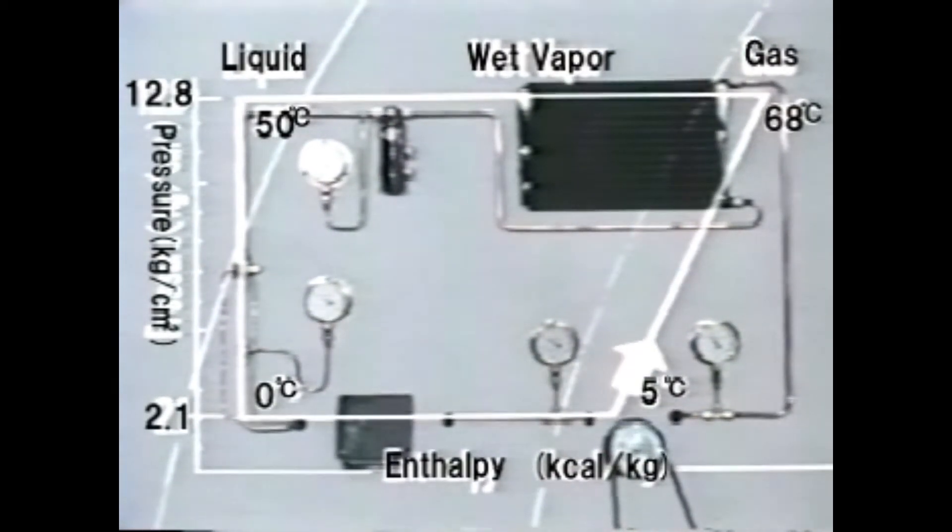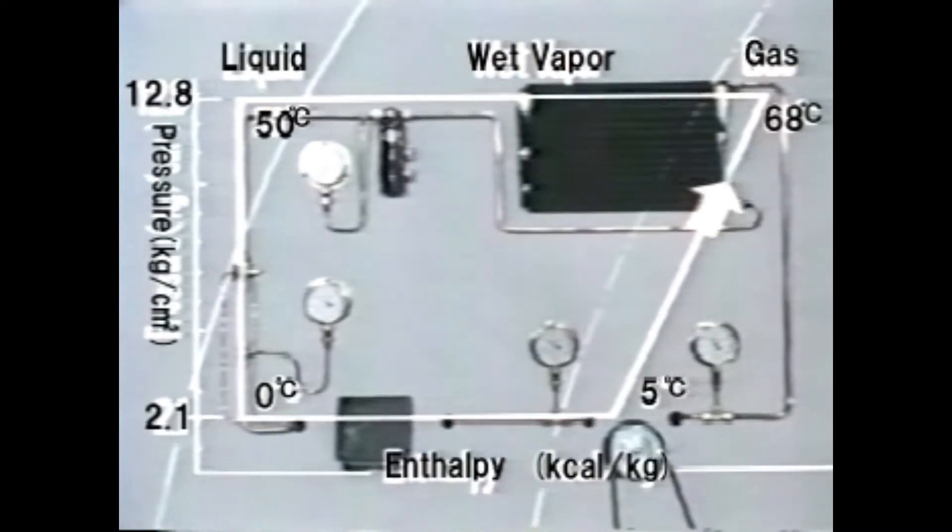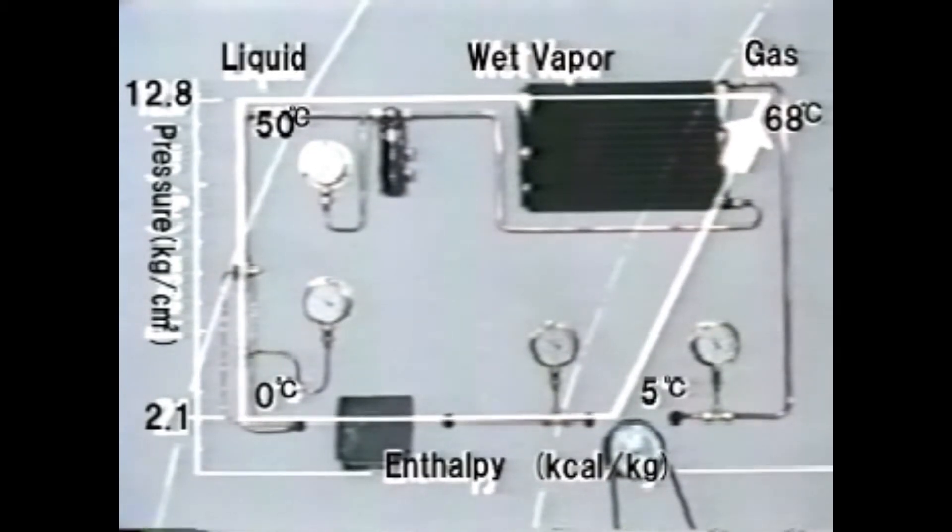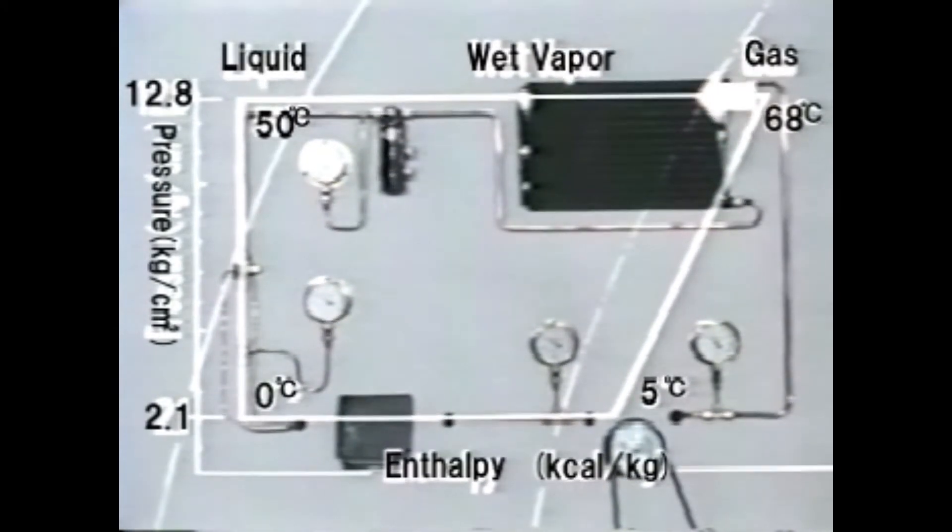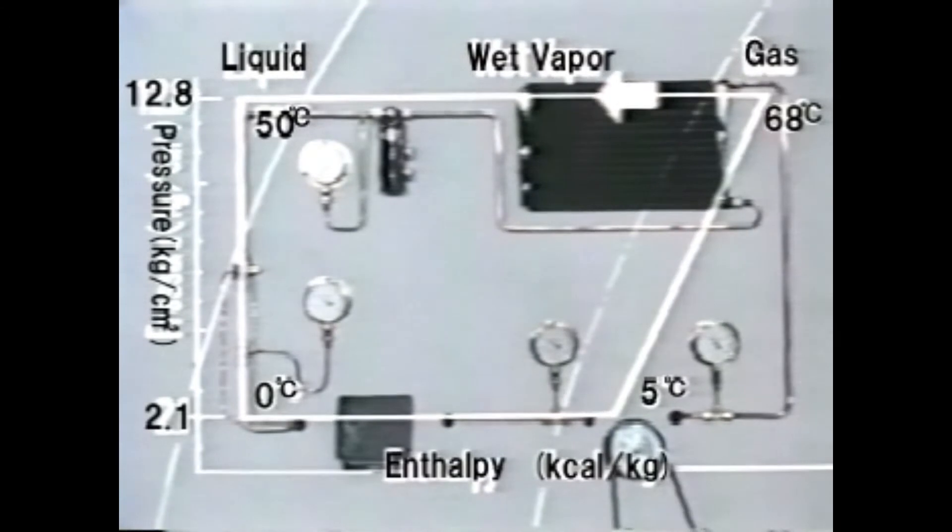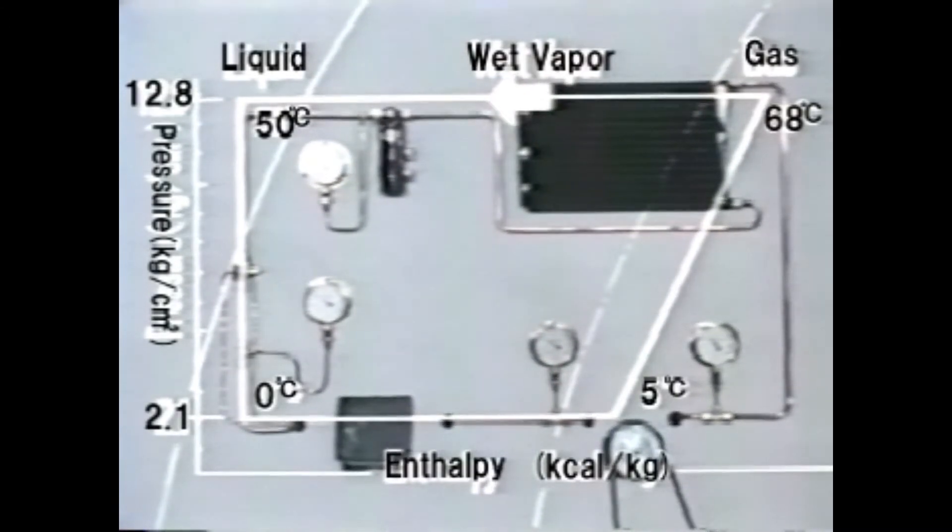And compressed in the compressor, it turns gaseous form with its pressure increased to 12.8 kilograms per square centimeter and its temperature at 68 degrees centigrade. In the condenser it is condensed under the same pressure into a liquid at 50 degrees centigrade, which is transmitted to the expansion valve.